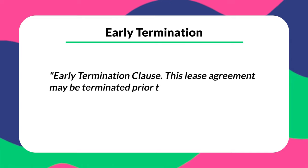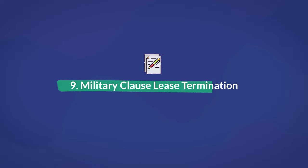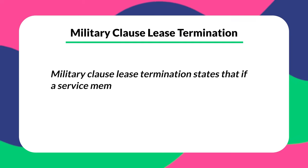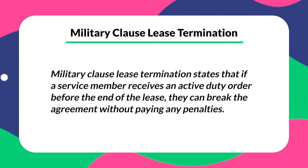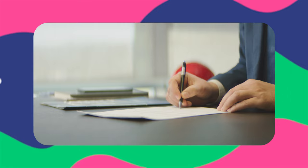An example of an early termination clause may be something like: 'This lease agreement may be terminated prior to its maturity date for the following reasons.' Number nine is the military clause lease termination. This protects service members and their families from any penalties that might occur because of active duty orders. It states that if a service member receives an active duty order before the end of the lease, they can break the agreement without paying any penalties. To properly break this lease, the service member must show proof they signed the lease before engaging in active duty by permanently changing to another station, and must also prove they intend to remain on active duty for at least 90 days. Regardless of circumstances, the person must provide the landlord with a written 30 to 60 day notice.